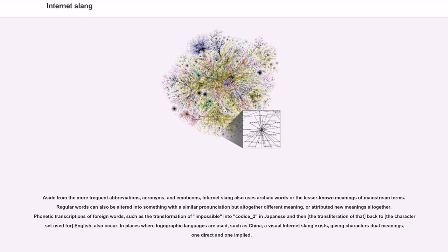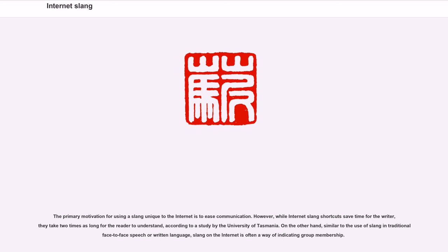In places where logographic languages are used, such as China, a visual Internet Slang exists, giving characters dual meanings — one direct and one implied. The primary motivation for using slang unique to the Internet is to ease communication. However, while Internet Slang shortcuts save time for the writer, they take twice as long for the reader to understand, according to a study by the University of Tasmania.